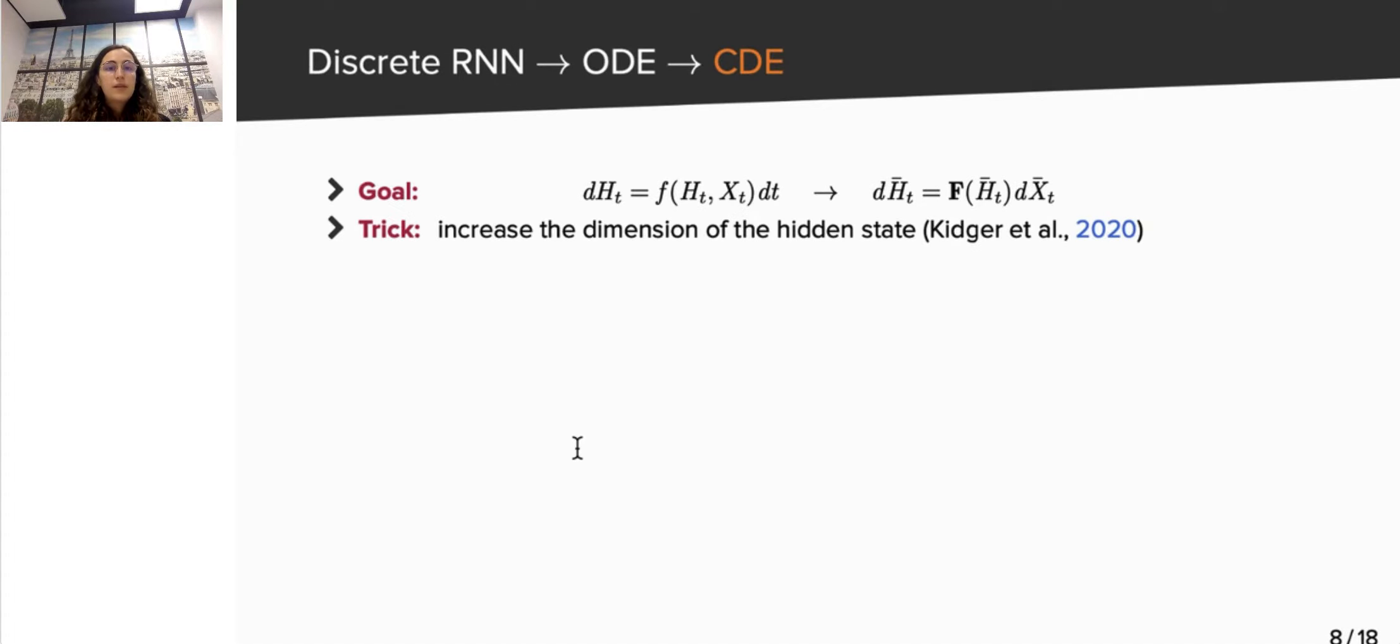The goal of rewriting the ODE as a CDE is to remove the dependency on the data from the function F. It can be done with simple linear algebra tools at the cost of increasing the dimension of the program. So, the solution of a CDE is a new hidden state of higher dimension denoted by h bar. Then, x bar is just a simple modification of x. And the bold f function is a map taking as input h bar, the new hidden state, and outputting a matrix of the correct dimensions. The right-hand side of the CDE is, therefore, a matrix-vector multiplication. F of h bar is a matrix, which we multiply by the vector dx bar.